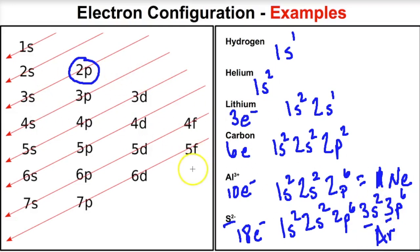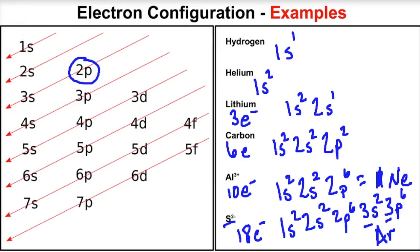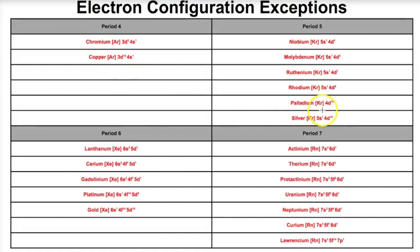Using this filling order, you can now start to write electron configurations for most atoms you'll be asked about. However, there is a breakdown to this rule once you get into heavier elements. For example, silver's electron configuration doesn't follow the diagonal rule perfectly. There are exceptions to the filling order for some heavier elements — pause and take note of these.